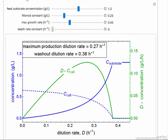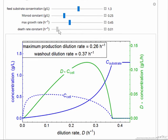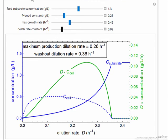When the death rate constant increases, notice that now at zero dilution rate, no flow through the reactor, everything dies.